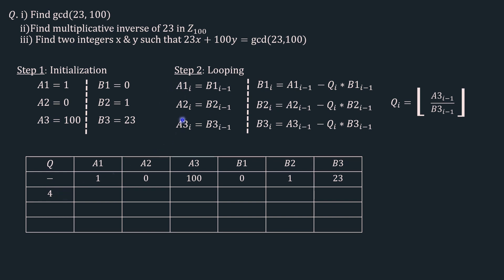We initialize the new a values with the previous b values: a1 = 0, a2 = 1, a3 = 23. Now we calculate the new b values: b1 = 1 − 4×0 = 1, b2 = 0 − 4×1 = −4, and b3 = 100 − 4×23 = 8. Let's move to the next row — you will understand the pattern it is following.